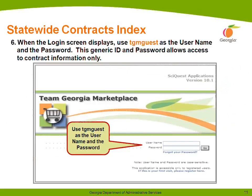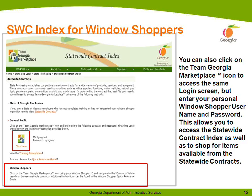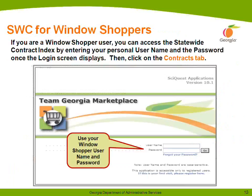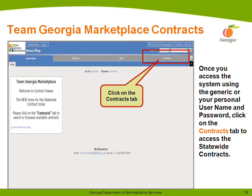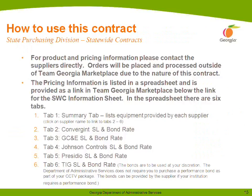Here you can see what the login screen looks like. You can enter TGM Guest as your username and also as your password, and it will take you to the contract information page. If you are a Window Shopper user and you have access to Window Shopper, you can click on that Team Georgia Marketplace logo and enter your personal Window Shopper user ID and password. Once you're logged in, you'll click on the Contracts tab over to your right-hand side. This will take you to where you can locate information on all of our statewide contracts, such as the statewide contract information sheet. Some of them have pricing information listed and a benefits page.